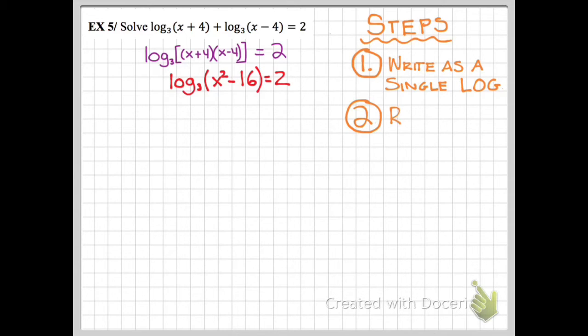That equals 2. My next step is going to be to rewrite this in exponential form. So I have log base 3 of x squared minus 16 equals 2. The base is 3, so I bring that down. 2 becomes the exponent. X squared minus 16 moves to the other side.